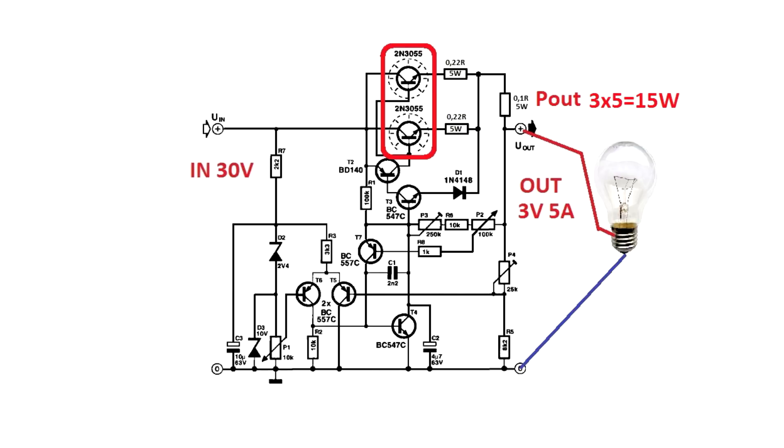So on the transistor there will be a voltage drop of at least 27 volts. Taking into account a current of 5 amperes, you will get 140 watts of power in the form of useless heat, which must be removed.